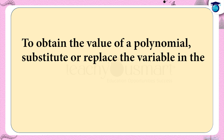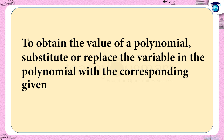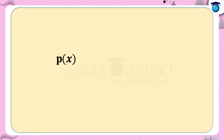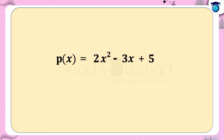Consider a polynomial p(x) = 2x² minus 3x plus 5. p(x) is a second degree or quadratic polynomial with one variable x.